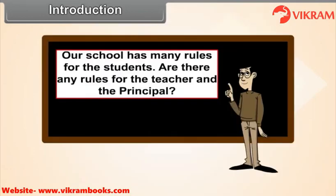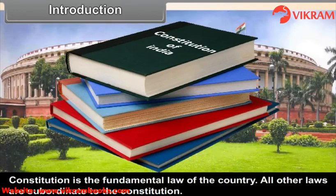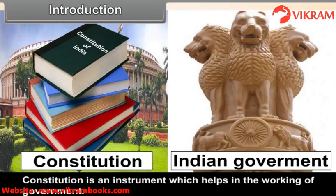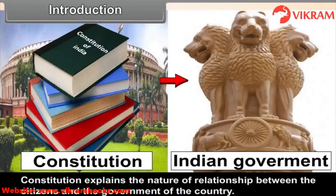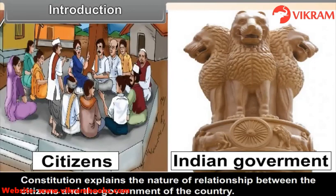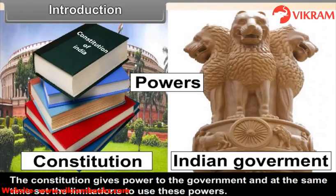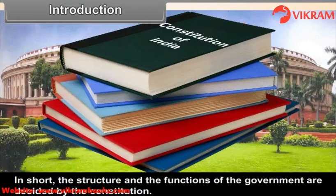Our school has many rules for students — but are there also rules for teachers and the principal? Constitution is the fundamental law of the country; all other laws are subordinate to it. It is an instrument that helps in the working of government and a framework within which all organs of government work. The Constitution defines the relationship between citizens and the government, and among citizens themselves. It gives powers to the government while also setting limitations on those powers, and includes provisions for the rights and duties of the people. In short, the structure and functions of the government are decided by the Constitution.